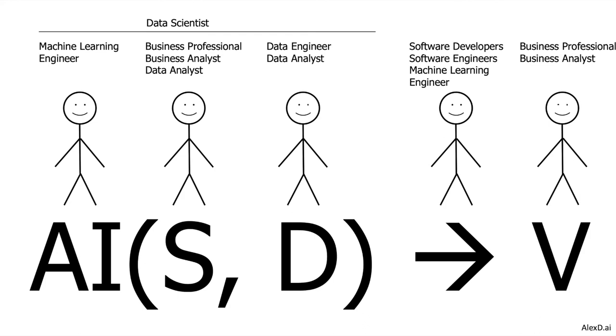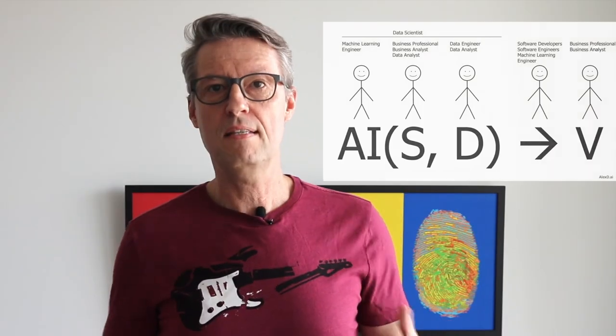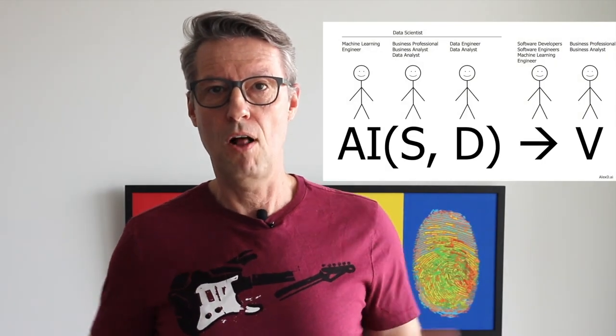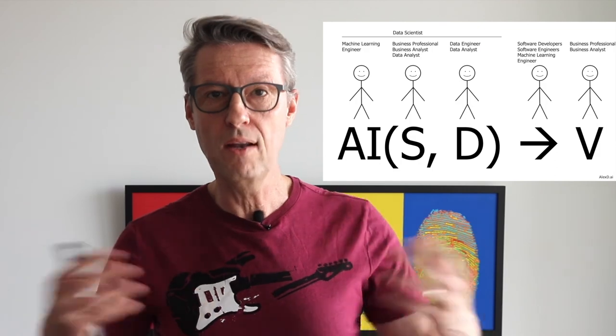But there's another important role: the data scientist. The data scientist has broad knowledge — they understand the business, how to manage the data, how to get insights from the data, and they understand the technology itself and how to apply it to get value. This is a very important role, and is sometimes almost a unicorn in the entire process of applying AI to get value.